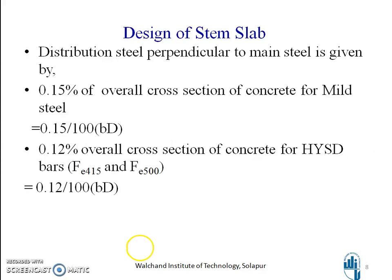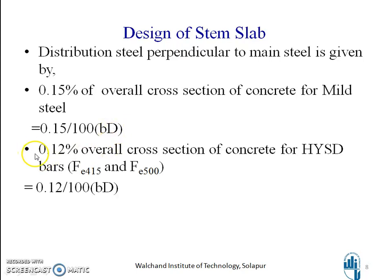The distribution steel, provided perpendicular to the main steel, is given by 0.15% of the overall cross-section of concrete for mild steel — that is 0.15/100 × b × D, where D is the overall depth. For HYSD bars FE415 or FE500 it is 0.12% — that is 0.12/100 × b × D.